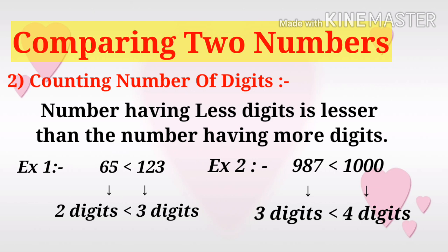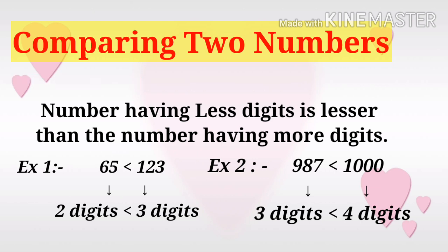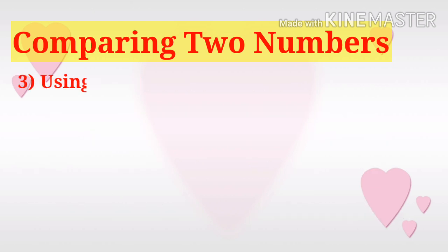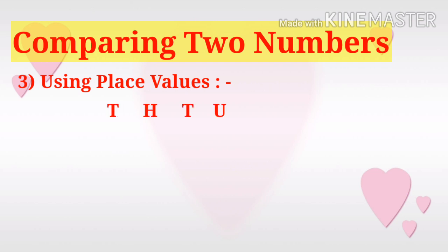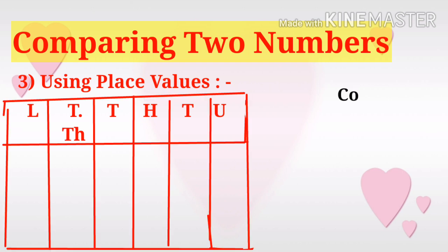We can also compare two numbers using place values. First, we write the place values: units, tens, hundreds, thousands, ten thousands, and lakhs. For example, let us compare 67,456 and 76,154.